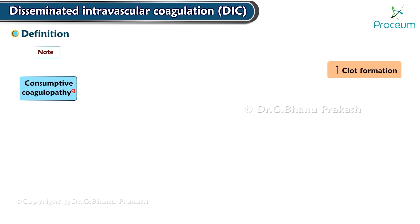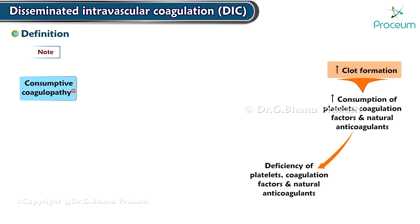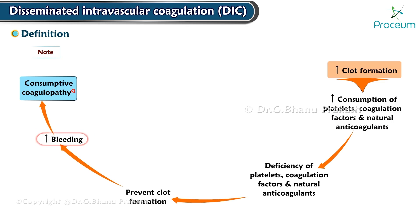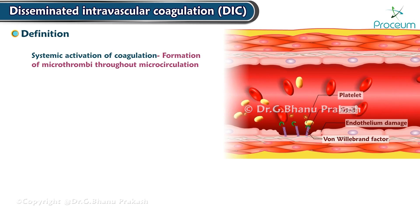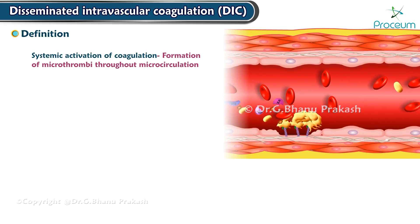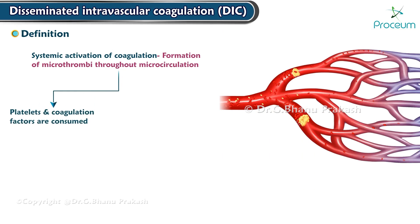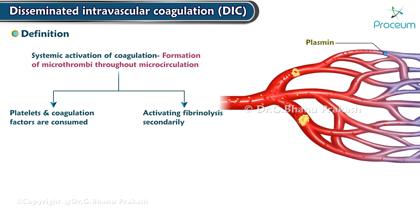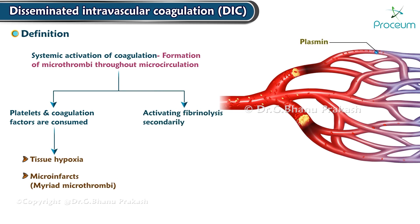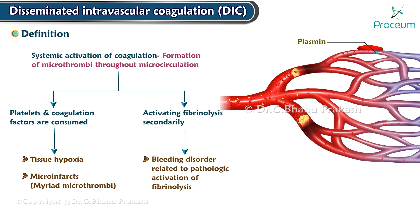Elements required for hemostasis — like platelets, coagulation factors, and natural anticoagulants — are depleted, leading to bleeding more commonly than all congenital coagulation disorders put together. There is systemic activation of coagulation leading to formation of microthrombi throughout the microcirculation. The platelets and coagulation factors are then consumed, thus activating fibrinolysis, and secondarily tissue hypoxia and microinfarcts caused by a myriad of microthrombi ensues, along with a bleeding disorder related to pathologic activation of fibrinolysis.